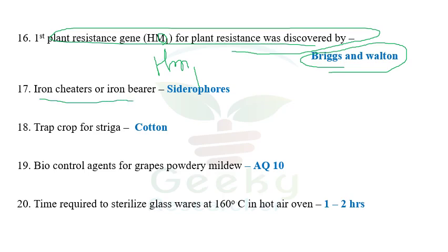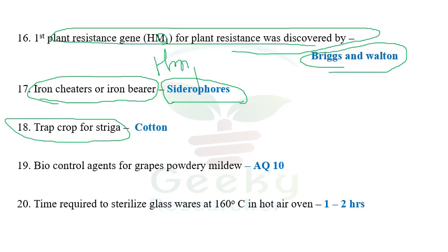The next question: iron chelators or iron bearers in bacteria are called siderophores. They may ask this in indirect formats like 'iron chelator' or 'iron bearer' — if you find these terms, the answer is siderophore. Trap crop for Striga: among the options given, the reliable answer is cotton. Cotton acts as a trap crop for Striga. The biocontrol agent for grape powdery mildew is AQ10, which stands for Ampelomyces quisqualis 10 — the most specific biocontrol agent recommended for grape powdery mildew.